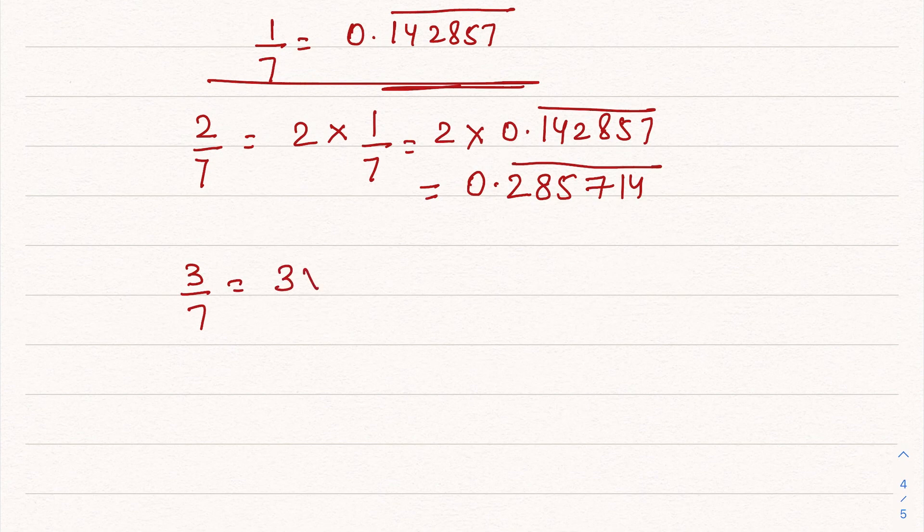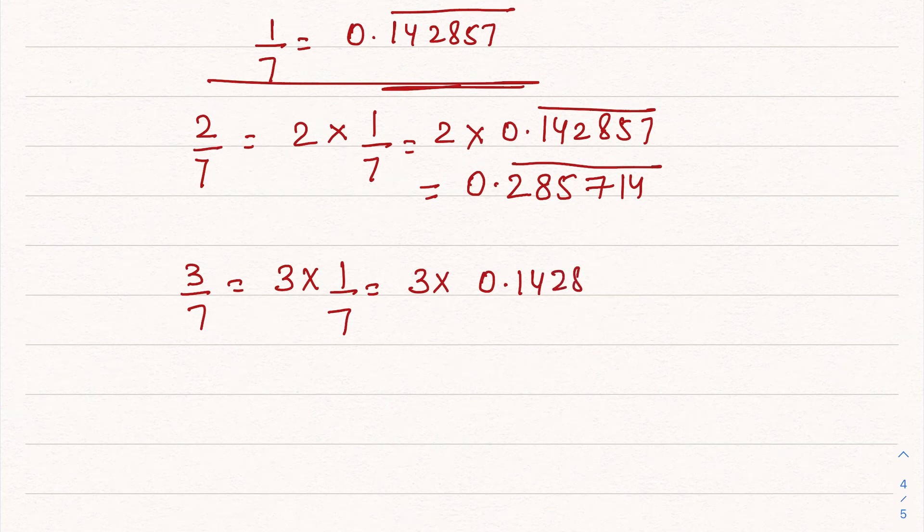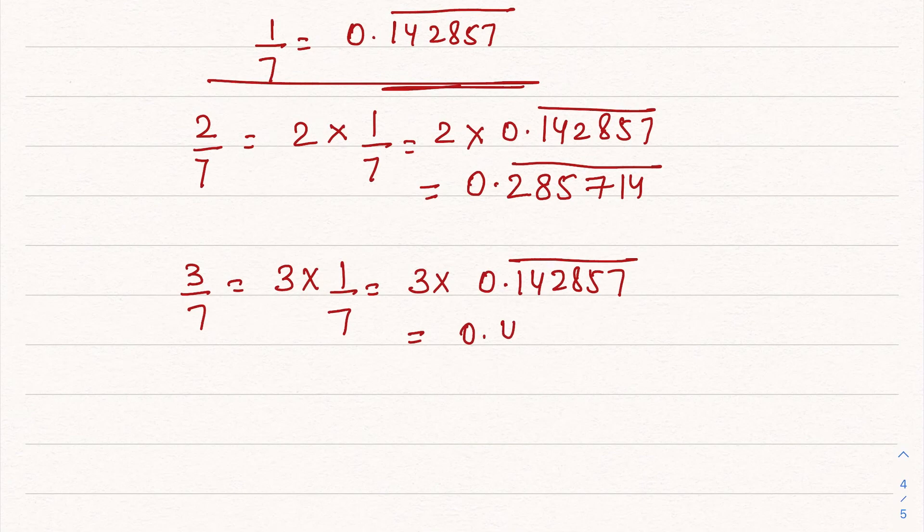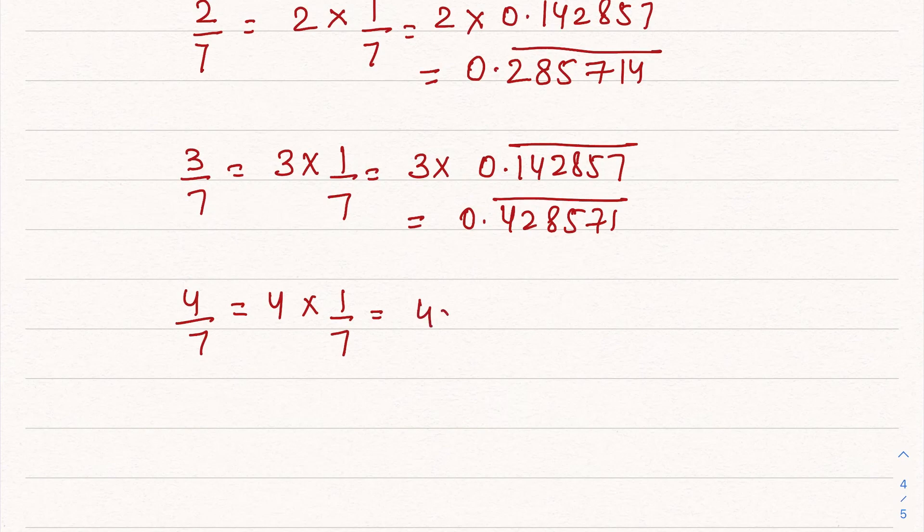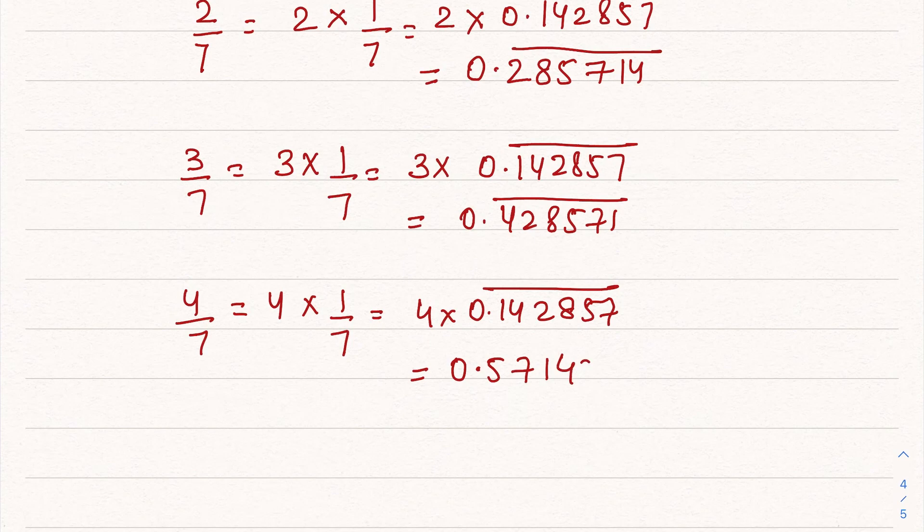For 3 by 7, we have to multiply 3 by 1 by 7. So 3 times 0.142857 bar. In this case, the answer is 0.428571 bar. I have already multiplied; you can multiply and check, you will get this answer. 4 by 7, that is 4 times 1 by 7, 4 times 0.142857 bar. This is coming as 0.571428 bar.